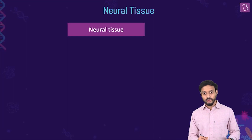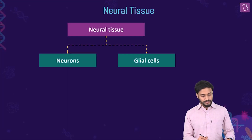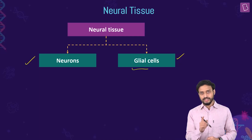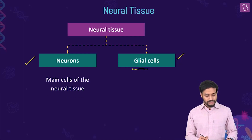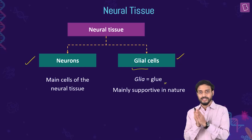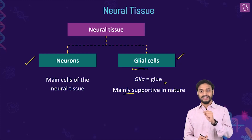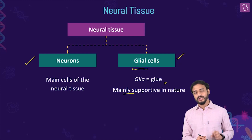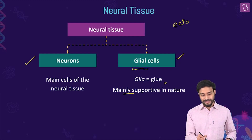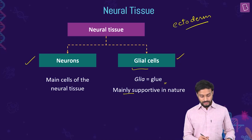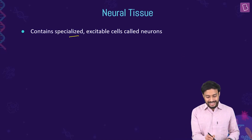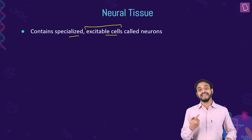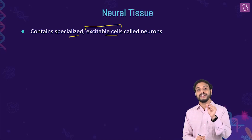Neural tissues are composed of neurons and glial cells. Neurons are the main cells of neural tissues, while glial cells — the word 'glia' comes from 'glue' — are mainly supportive in nature. Neural tissues develop from the ectoderm germ layer. They contain specialized excitable cells called neurons, which can transmit electrical impulses.